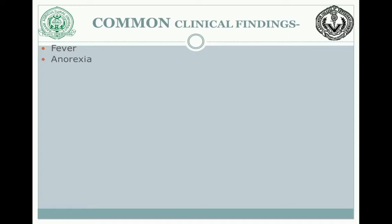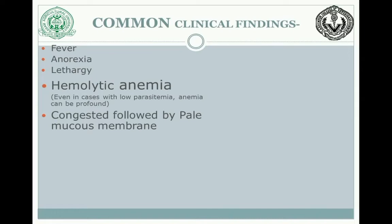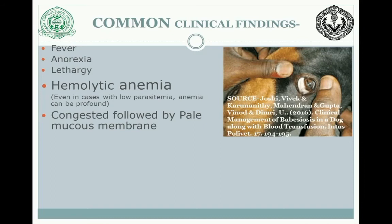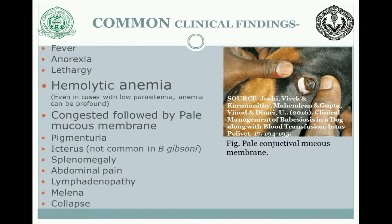Common clinical findings include fever, anorexia, and lethargy. There is hemolytic anemia — one of the most common signs. Initially the mucous membranes tend to be congested, which later become pale due to anemia. There is also pigmenturia, icterus — which is not very common in Babesia gibsoni infection, as it tends to cause more chronic infection — splenomegaly, abdominal pain due to splenomegaly, lymphadenopathy, melena, and the animal might collapse.